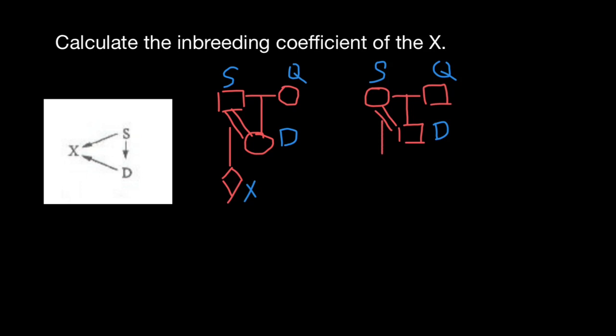This is individual X. As you see, what we see here can be represented by this pedigree and this pedigree, but this is not going to affect our calculations. I want to show you three different methods how we can calculate inbreeding of individual X.